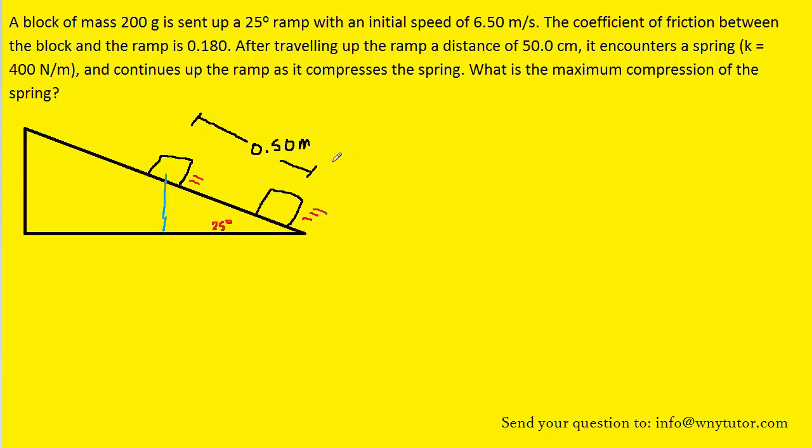It turns out that this problem will be broken up into two parts. In part one, the block is sent up the ramp with an initial speed of 6.5 meters per second, and then it travels a little bit up the ramp, about half a meter, before it encounters a spring. But let's not worry about the spring just yet. We only want to look at the situation in which the block travels that 0.5 meters. Now because there is friction present here, we cannot use a simple energy conservation formula. We're going to have to use a modified version of the formula.